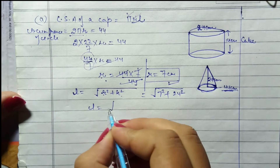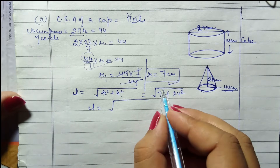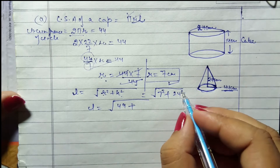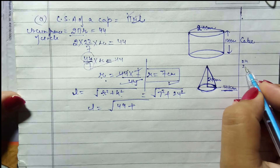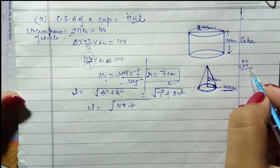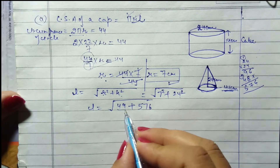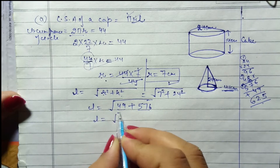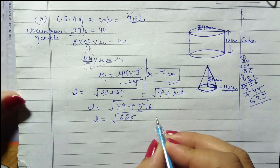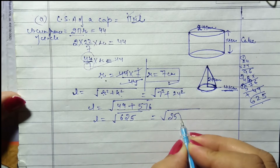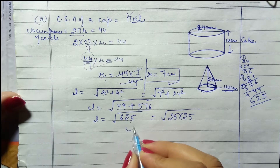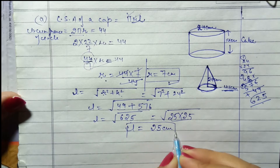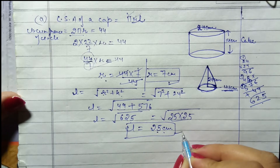l = √(7² + 24²) = √(49 + 576) = √625. And we know that 25 × 25 = 625. So l ki value hamare paas 25 cm aa rahi hai.